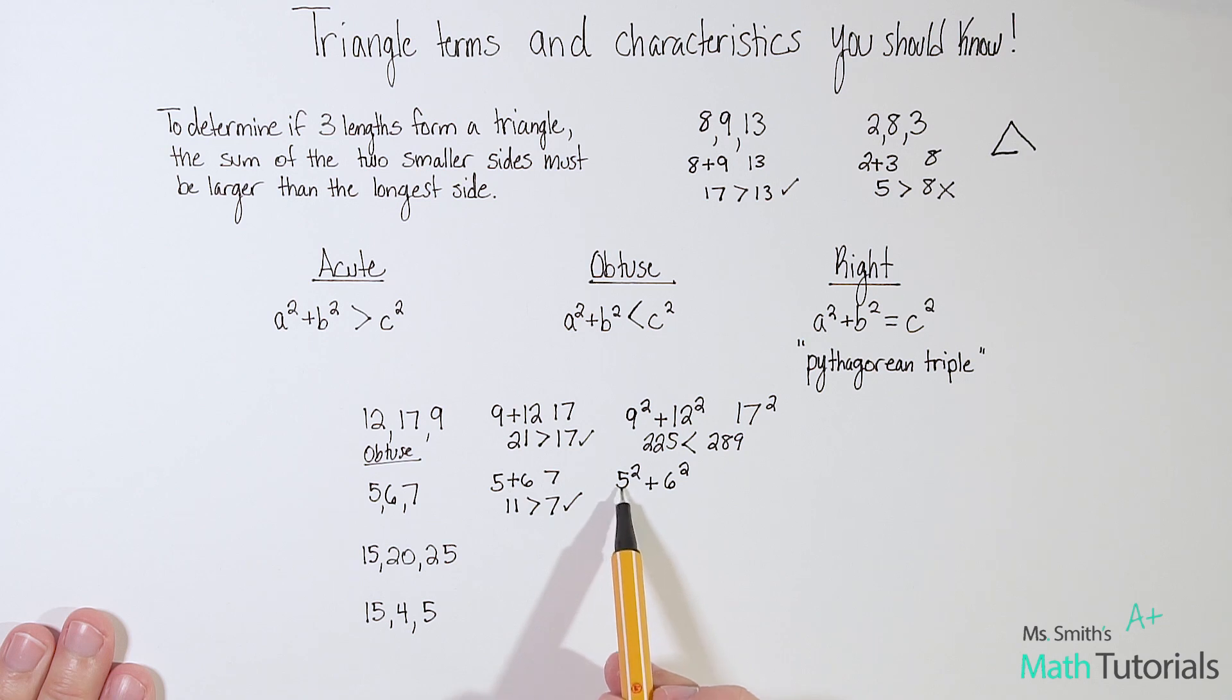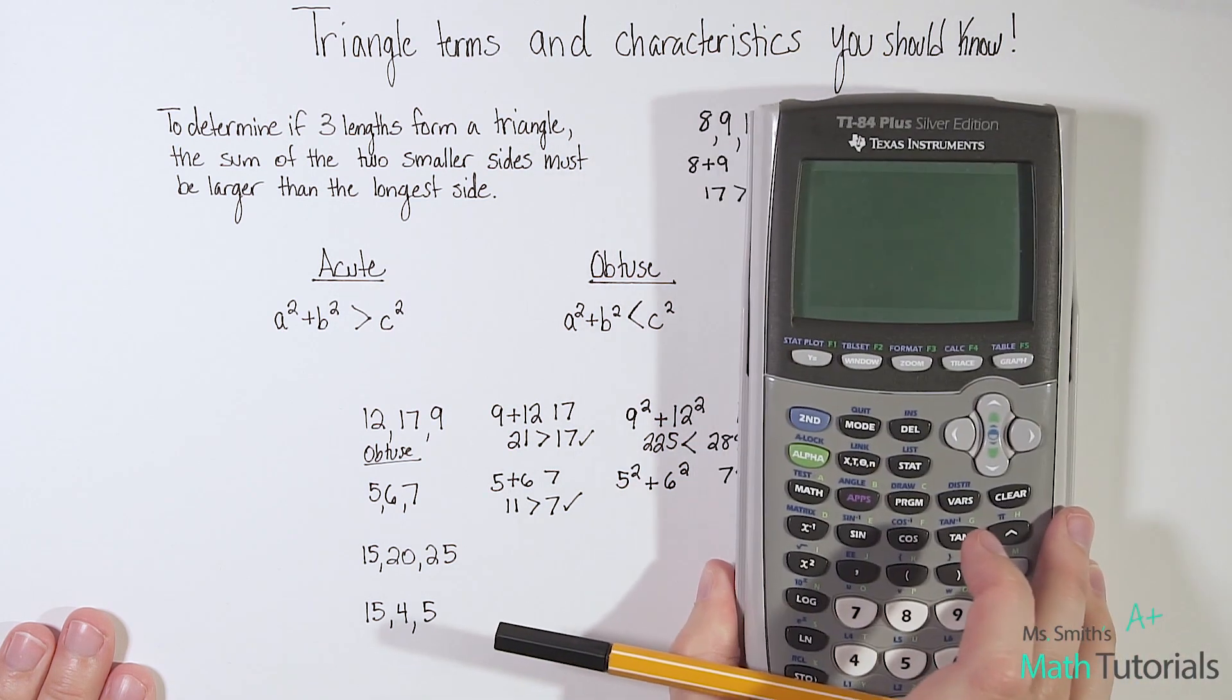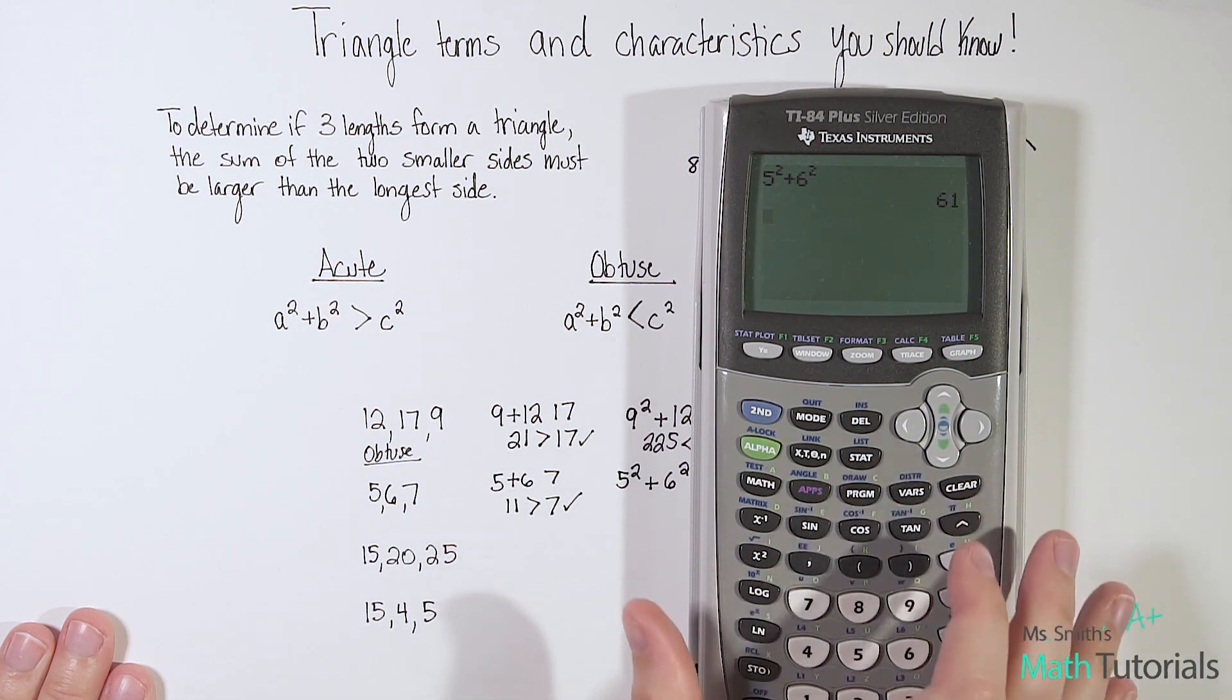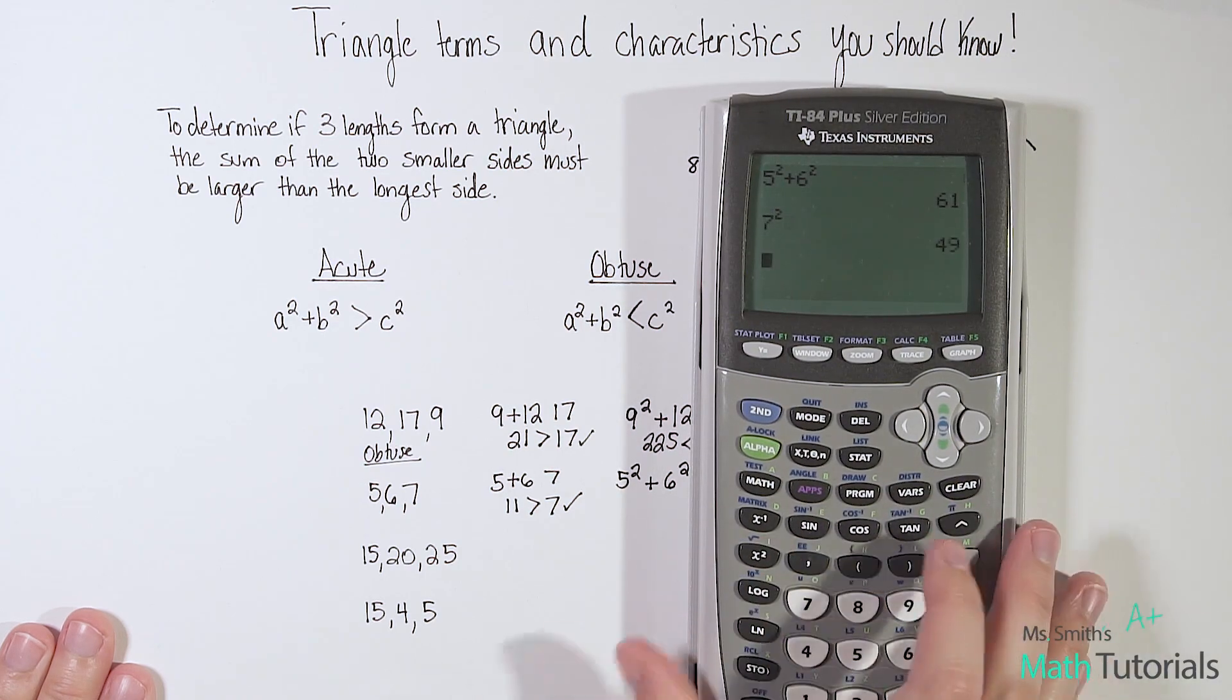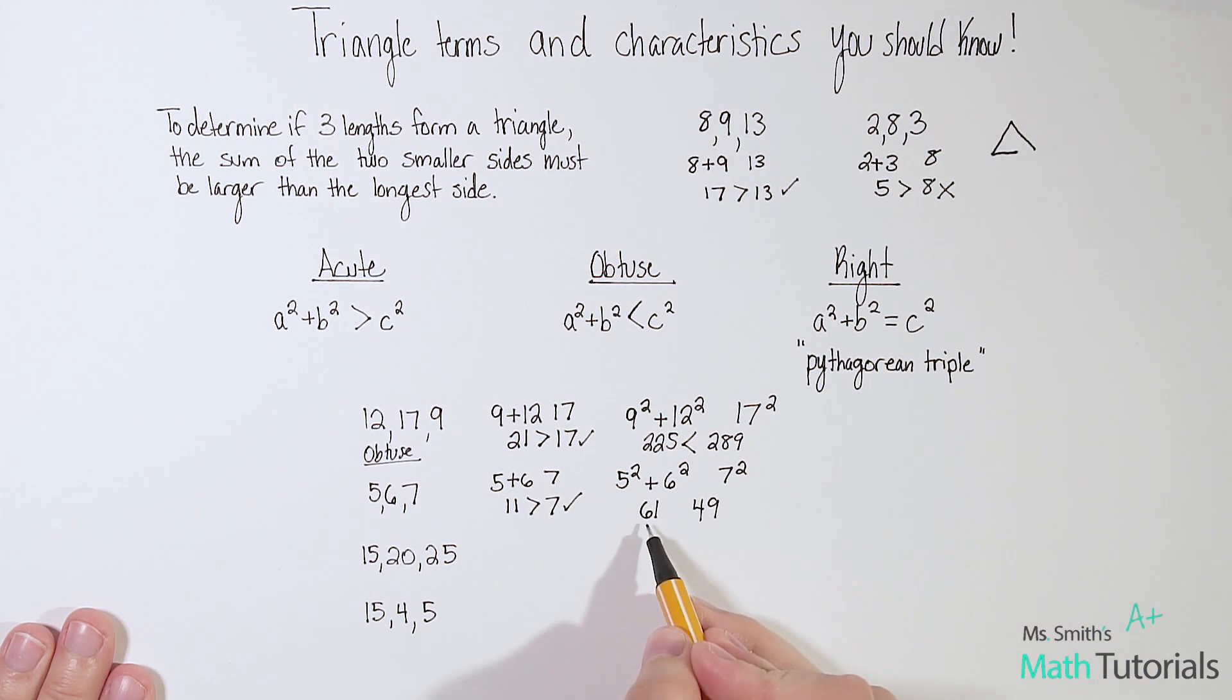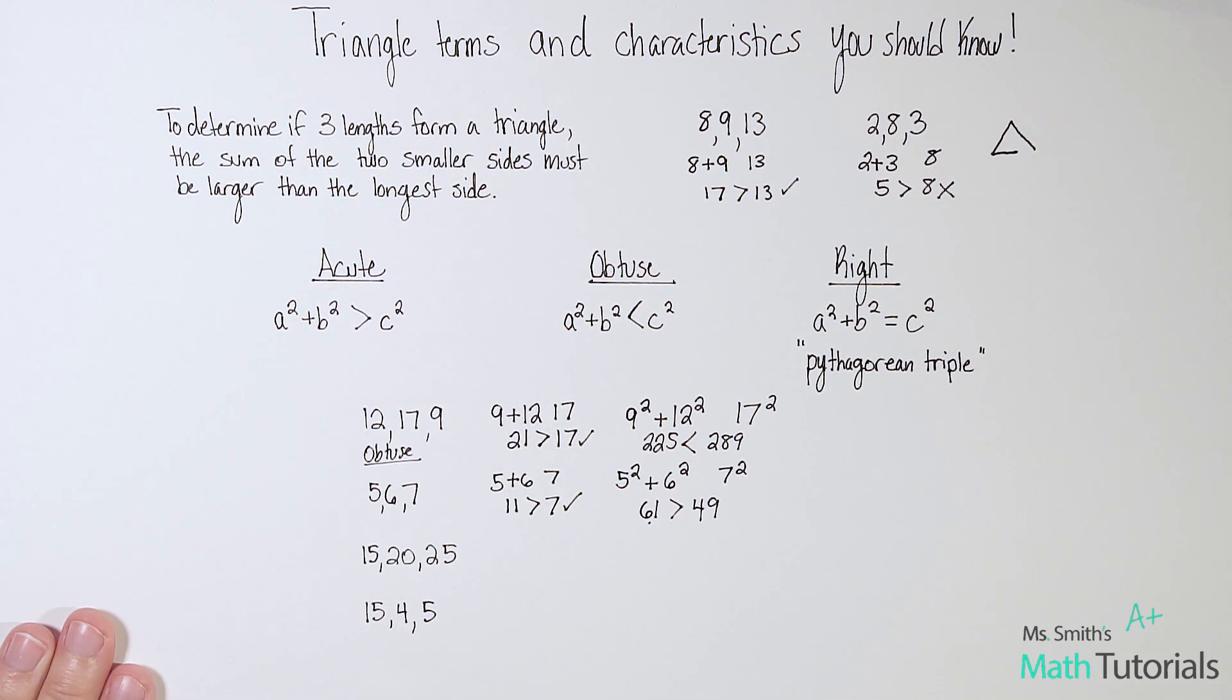And one important thing is I just always pick the lowest one for a. It doesn't actually matter, right? I could have called 6a and 5b. These two are interchangeable. It won't affect your answer whether I switched those or not. And then we've got 7 squared. So we've got 5 squared plus 6 squared. And that is 61. And then our 7 squared. That's 49. So we've got 61 and 49. So which one is bigger? 61 or 49? Obviously the 61 is. So remember, if a squared plus b squared is greater than c squared, this is an acute triangle. So we can say this one is acute.